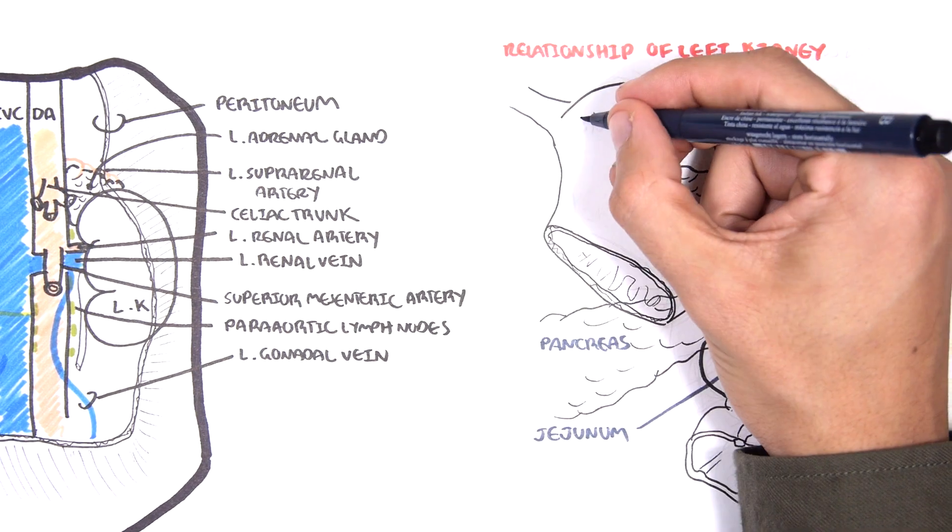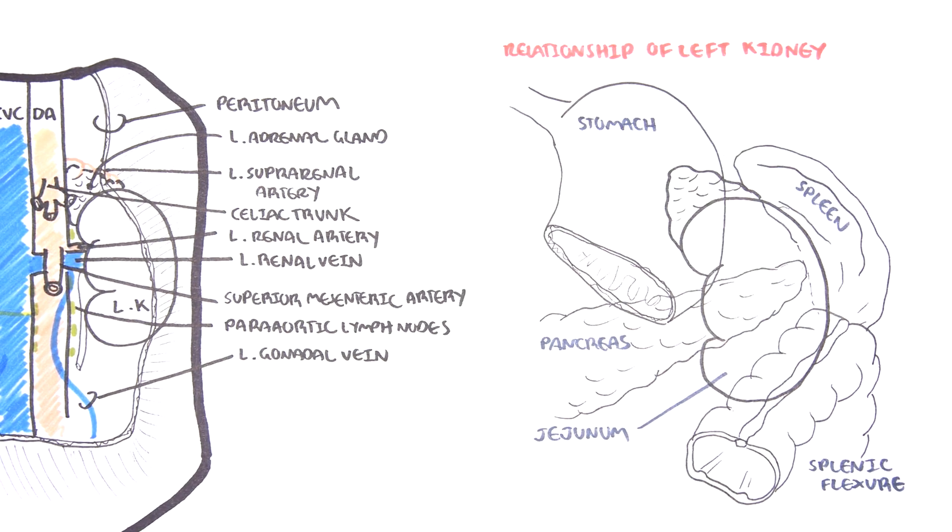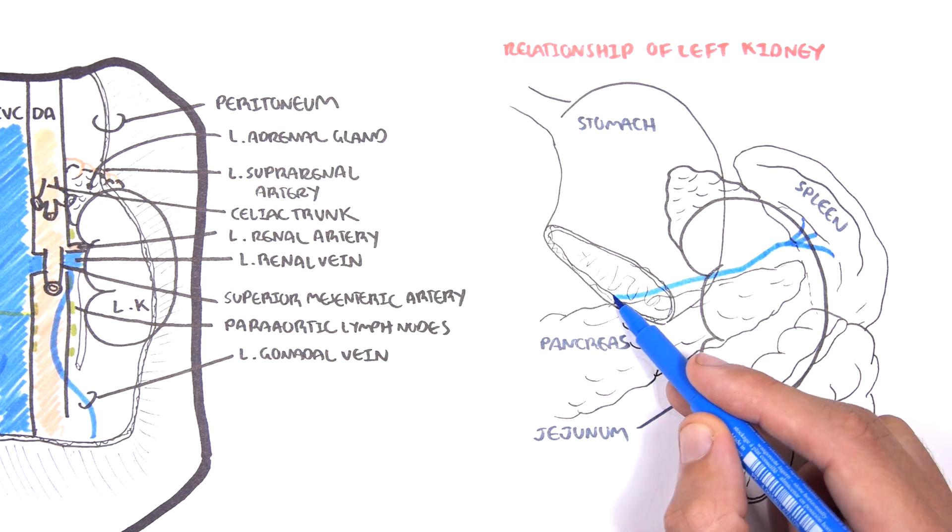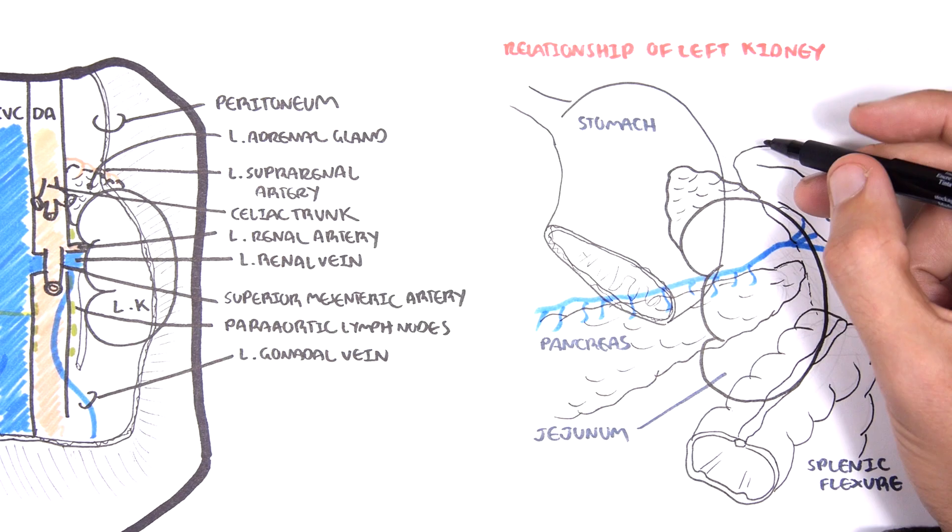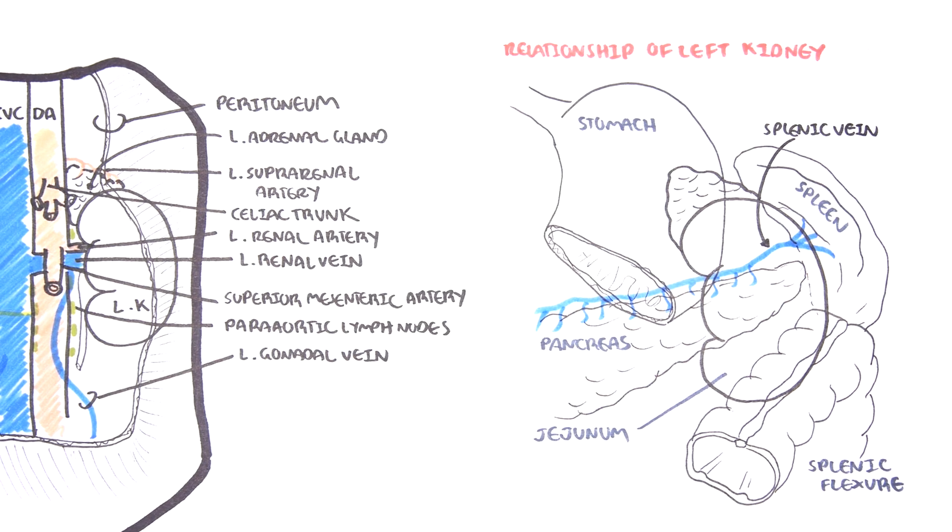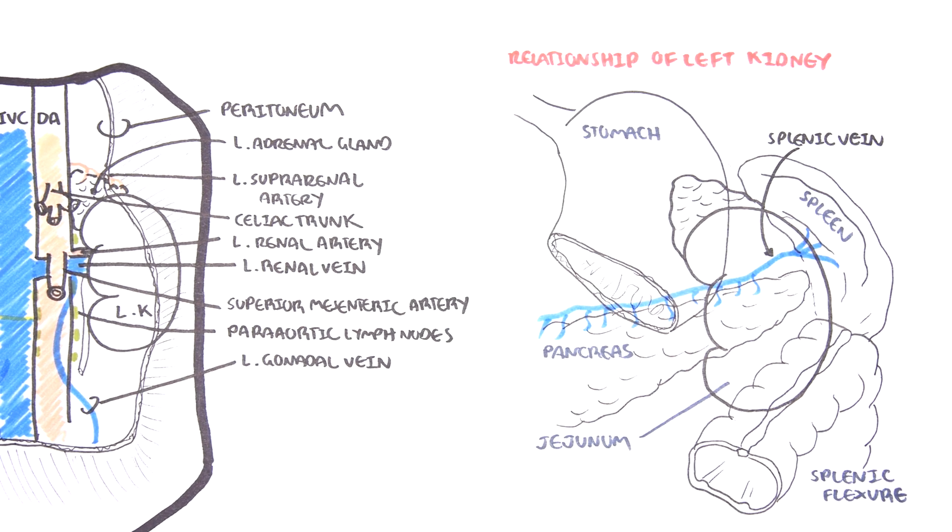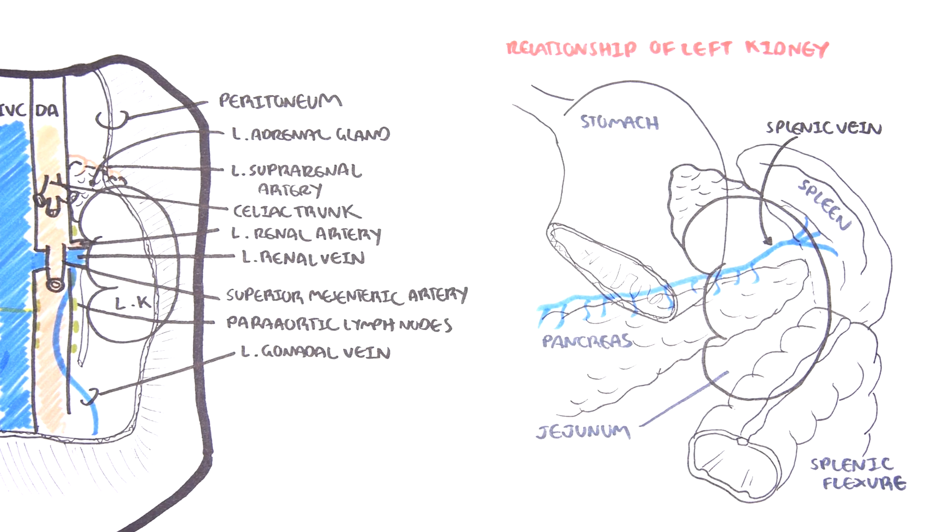While on this diagram it's good to know that the splenic vein drains also the pancreas here and will then join with the inferior mesenteric vein and then the superior mesenteric vein before forming the portal vein.